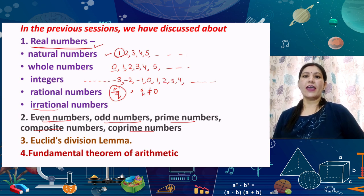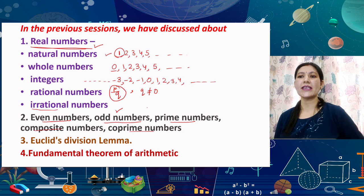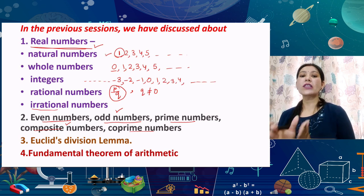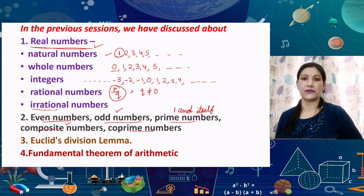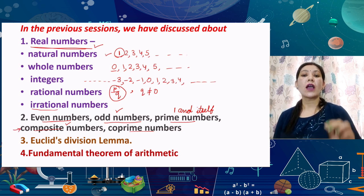We have also discussed even numbers — numbers divisible by 2 — and odd numbers — numbers not divisible by 2. Then about prime numbers and composite numbers: all numbers which have only two factors — factor 1 and the number itself — are known as prime numbers. If a number has only those two factors, it is prime.